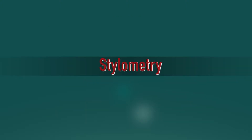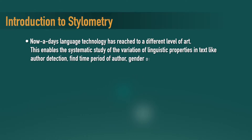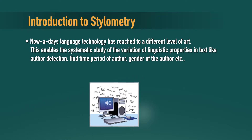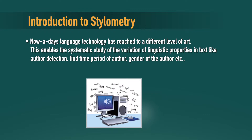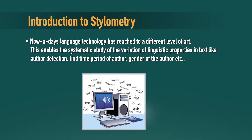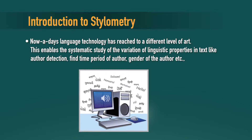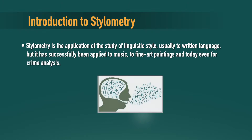The next important part in crime analysis is stylometry. We will try to introduce that. Nowadays, language technology has reached a different level of art. This enables the systematic study of the variation of linguistic properties in texts, like author detection, finding the time period of an author, gender of the author, etc. Stylometry is the application of the study of linguistic style,